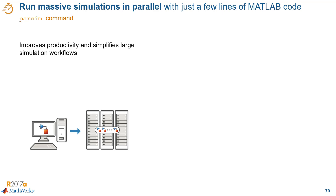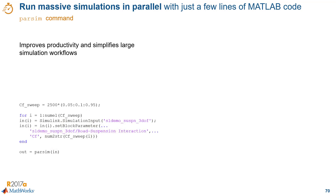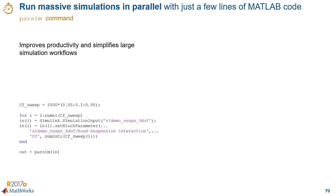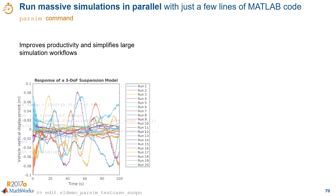To run in parallel, you just need to use a few lines of MATLAB code to create a simulation input object. You specify the parameters you want to vary, and then simulate with the parsim command to run hundreds, thousands, and millions of simulations.